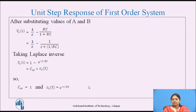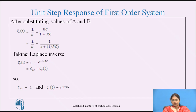The transient state response is totally dependent on the values of R and C. If the values of R and C are changed, then the location of the pole, that is −1/RC, is also changed. It is also observed that the change in the values of R and C does not affect the steady state response. So, the steady state response is independent of the values of R and C.